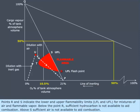Points R and S indicate the lower and upper flammability limits, LFL and UFL, for mixtures of air and flammable vapor. Below point R, sufficient hydrocarbon is not available to aid combustion. Above S, sufficient air is not available to aid combustion.